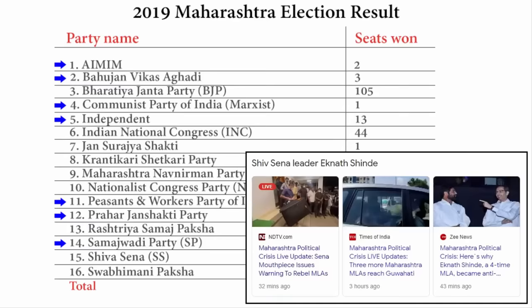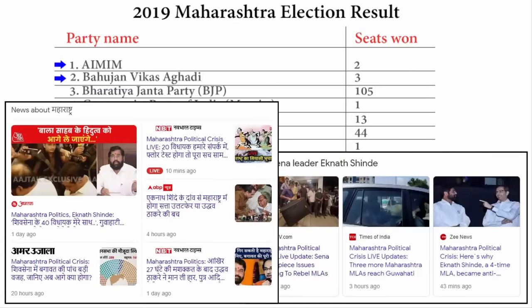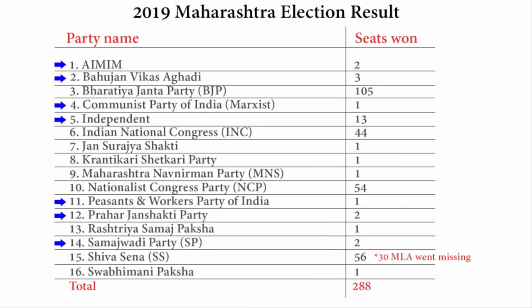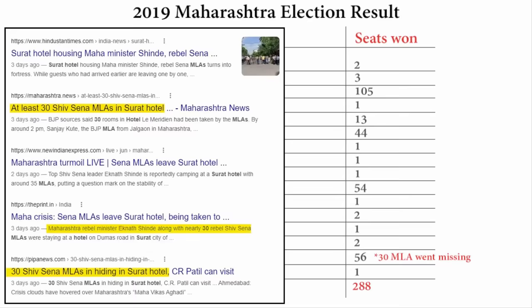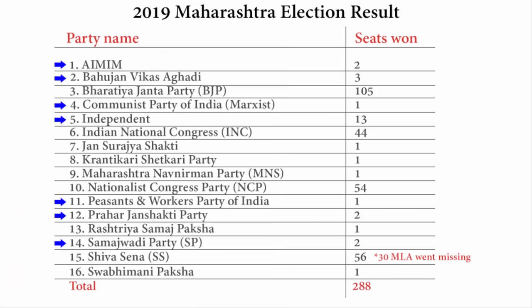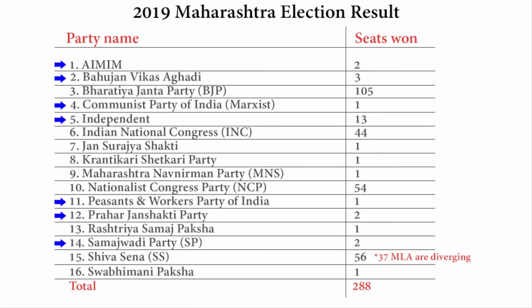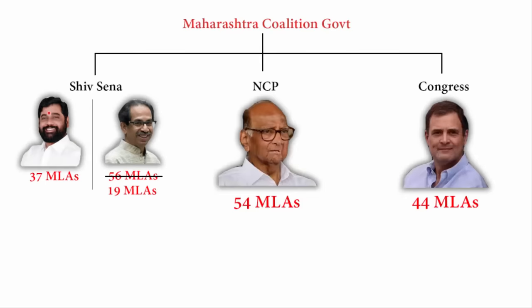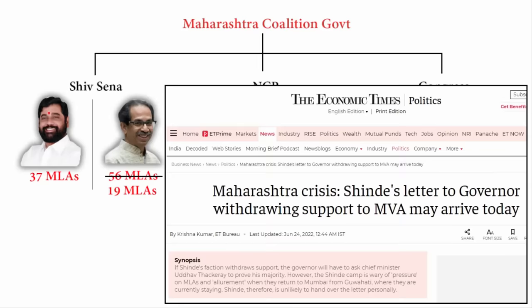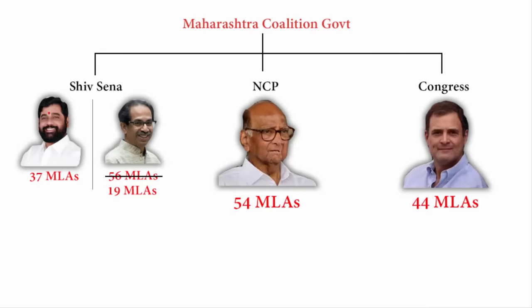Recently, on 22nd June — that is on Monday — Eknath Shinde, who is an MLA of Shiv Sena, along with 29 more MLAs from Shiv Sena went missing. They were unreachable and were found to be resting in a hotel in the city of Surat, Gujarat. By going to Gujarat they directly hinted they want to support BJP. Initially there were 30 MLAs who went missing, and now 37 MLAs are showing support to Eknath Shinde. These 37 MLAs have signed a letter given to the Governor of Maharashtra saying Eknath Shinde is their leader and not Uddhav Thackeray. Eknath Shinde has effectively created his own group within the Shiv Sena party.